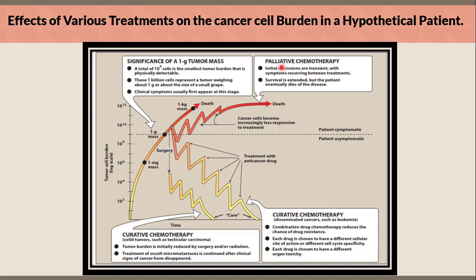The other option is palliative chemotherapy, where initial remissions are transient with symptoms recurring between treatments. Survival is extended, but the patient eventually dies of the disease. Cancer cells become increasingly less responsive to treatment, and finally death occurs. Below 1 g mass or 10 to the power of 9 cells, the patient is asymptomatic; symptoms will start from the 1 g mass and above.